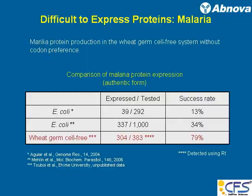Another application has been the development of a vaccine for malaria. Malaria proteins are very difficult to express. Different people tried various systems, but when you look at the success rate, it's only 10 to 30 percent for malaria proteins. In the wheat germ cell-free system, it goes up to 80 percent, and sometimes higher. Different people report very similar results.